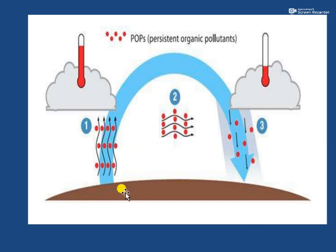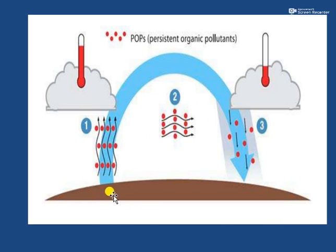Once a persistent organic pollutant has been formed, it moves from one place to another. It comes into the atmosphere, and then through rain it comes back to the lithosphere. So these pollutants cycle between the lithosphere and atmosphere, always remaining in the ecosystem without leaving it.